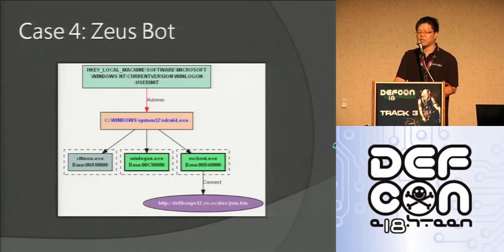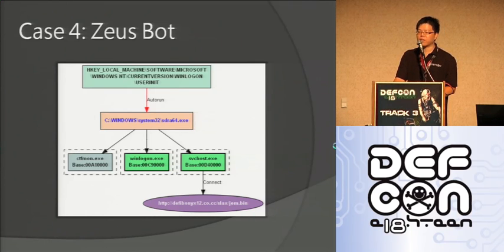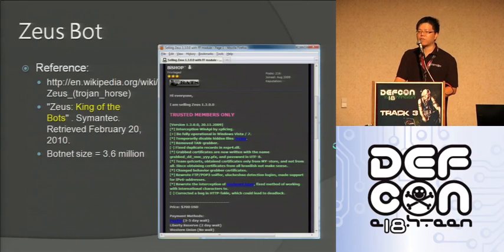The last one is ZooSpot, another malware we studied. It's also a very famous one. You can see that it uses the Winlogon notify mechanism through the registry key, and it will infect every process on the system, then connect to a CNC server to make you a bot. ZooSpot is so famous that it even has its own Wikipedia page, and one security vendor even named it the 'king of bots.' Its botnet size is around 3.6 million.